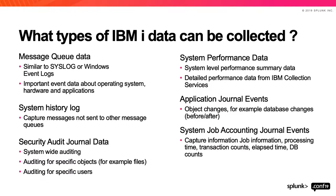Performance data is always important for operations analytics. We have different options to get performance data from the IBM I system — system-level summary data or detailed data from IBM I collection services, which provides very granular performance data. You may also want information from your applications, such as field-level changes from journaled files, and the system accounting journal events to see what users and applications are using the most resources on an IBM I system.